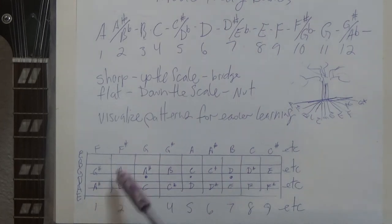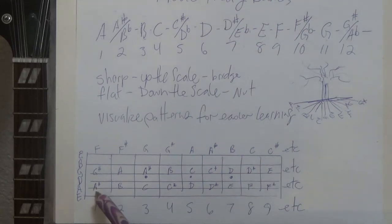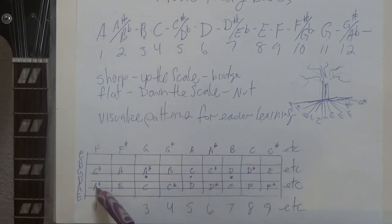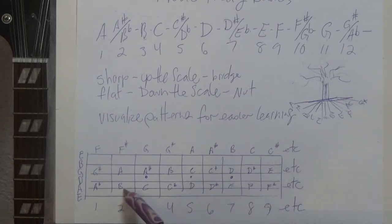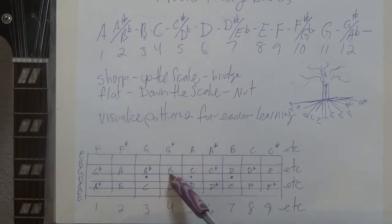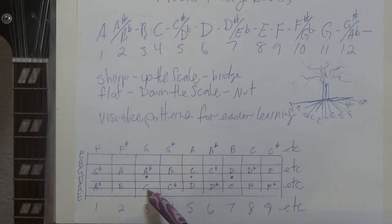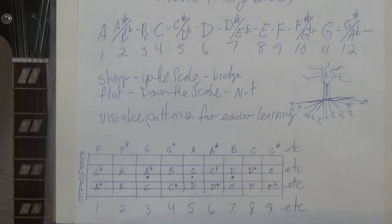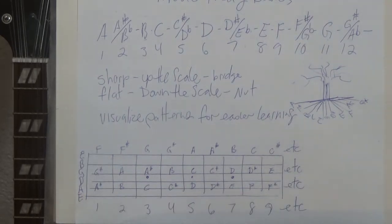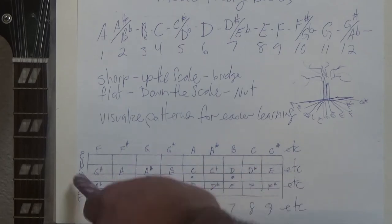And if we look at this — remember I mentioned visualizing patterns for easier learning — there's an A sharp here, we come down at an angle, there's an A sharp there, we come up at an angle, there's an A sharp there. We could just make like a line. Same thing with all the other notes: B, there's a B there, come up an angle, there's a B there. Same thing with the C. It's in patterns. The way that the notes reside on the guitar fretboard can be made out in patterns, and it's actually a really great way of learning if you just visualize the patterns.